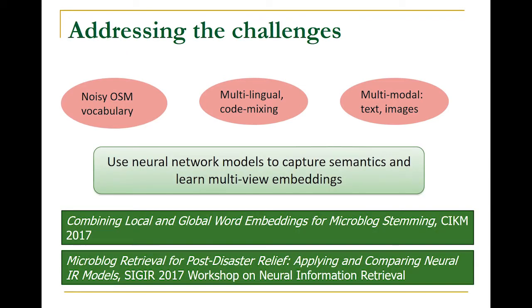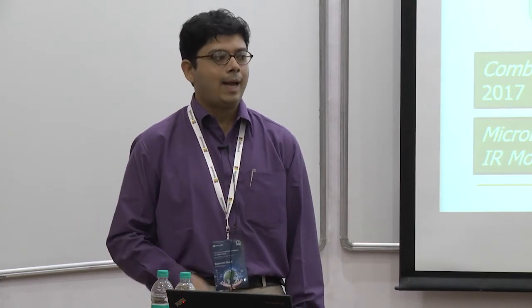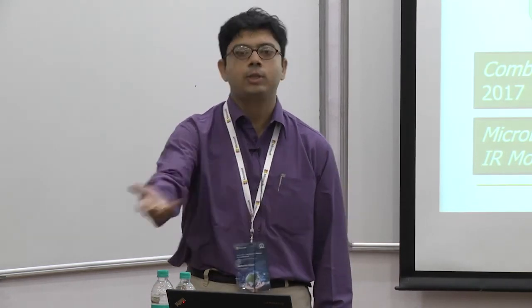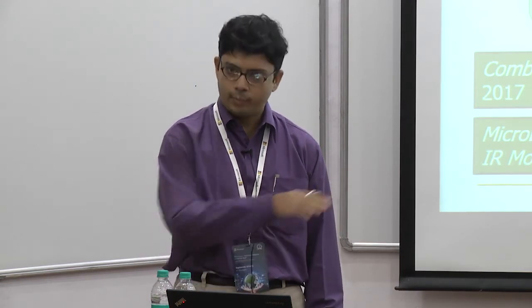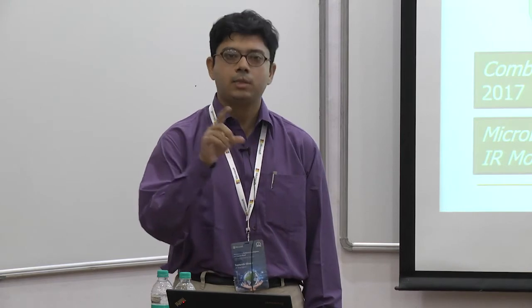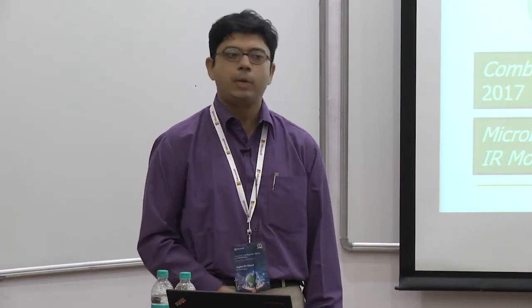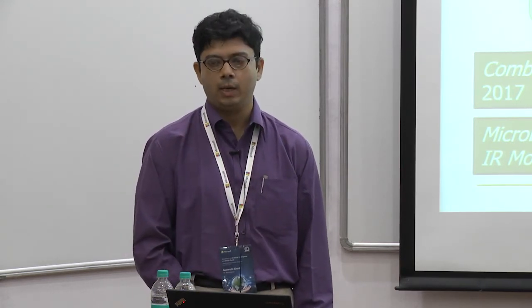We are using neural network and deep learning models with some success — they are performing well, but there are issues. These models usually take a lot of data and time to train. There's no point designing a model that takes six hours to train, because you will only be able to deploy it after six hours. The natural approach would be to train models on prior events and use them on future events — we tried that, and it's difficult. A group at the Qatar Computing Research Institute has released word embeddings trained on different kinds of disaster data, but when a new event happens, the vocabulary is so different that these pre-trained models are usually not very useful.